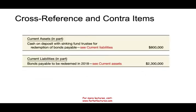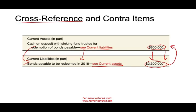Cross-reference and contra items are very important, especially in auditing. For example, cash on deposit with a sinking fund trustee for the redemption of bonds shows $800,000 — and says 'see current liabilities.' Under current liabilities, you would see bonds payable to redeem in 2018, referencing 'see current assets' at $2.3 million. These items complement each other: the cash deposit and the bond liability cross-reference one another so users can see the connection.